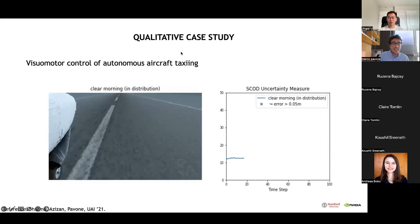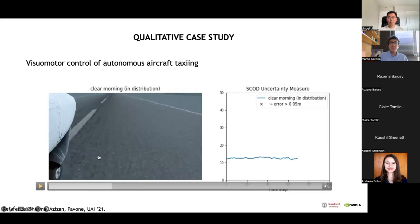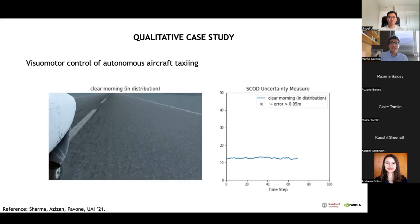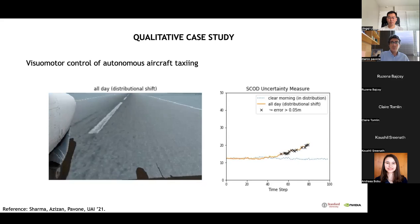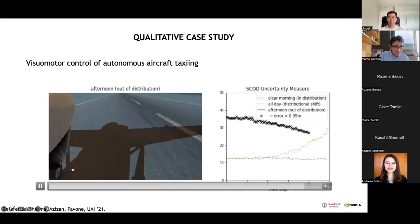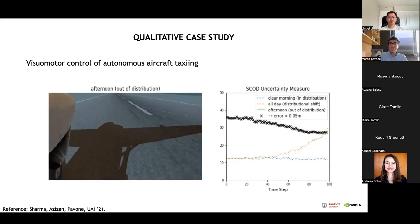We see that when deployed on nominal conditions similar to training conditions, the network doesn't make mistakes and the SCOD uncertainty value stays low. But as we reach different lighting conditions, afternoon conditions here, which were not included in the training data, we start seeing shadows. These shadows cause large errors in the estimates of lateral displacement. But fortunately, this situation is picked up by the monitor, whose output is substantially higher than in the nominal case.